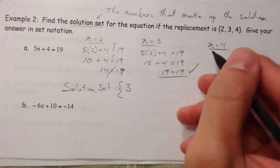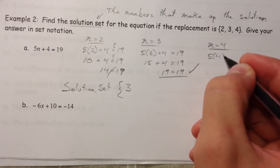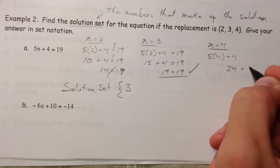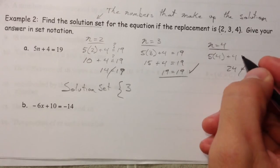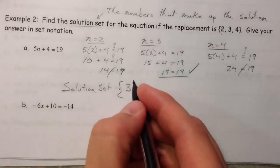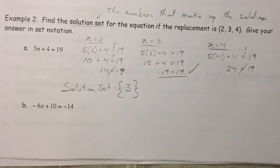n equals 4. 5 times 4 plus 4 is 20 plus 4, or 24, equals 19. And that is not true. And so I'm not going to include that. So my solution set only contains one element.